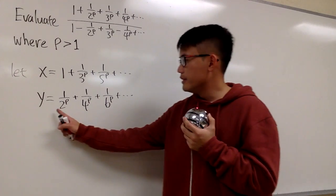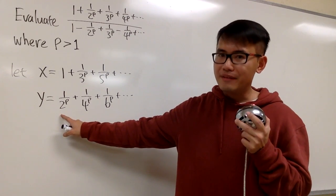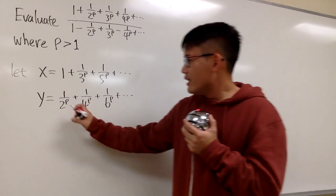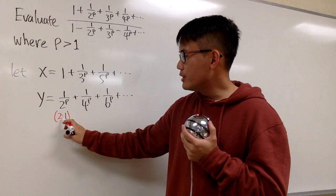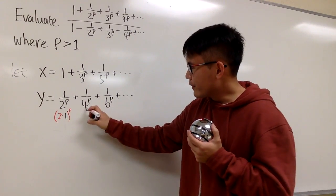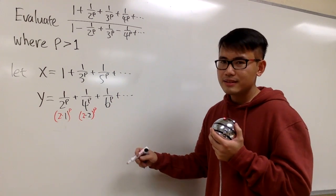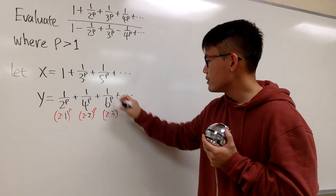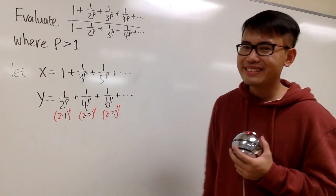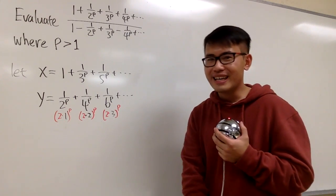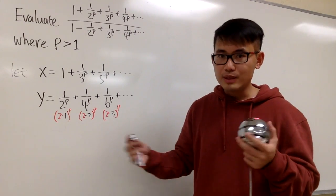Now, this is the interesting part. Let's look at the even terms. The nice thing is that when you have even numbers, you can also produce odd numbers by factoring. Let's look at the 2: write it as 2 times 1, raised to the p power. For the 4, look at it as 2 times 2 raised to the p power. For the 6, break it down as 2 times 3, raised to the p power. You can get odd numbers from even numbers by factoring out the 2s, and you can do this infinitely many times. Once you factor out the 2s in the denominator, you have 2 to the p in all the denominators, so we can factor things out.